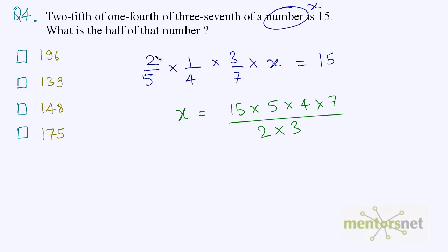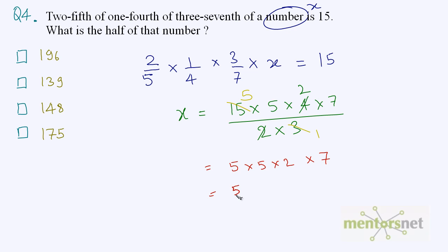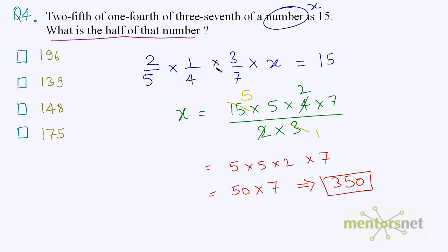We can cancel 2 and 4. Cancelling: 2 times 2 is 4, and 3 times 5 is 15. So we have 5 times 5 times 2 times 7, which equals 5 times 5 = 25, then 25 times 2 is 50, and 50 times 7 is 350. So the value of x is 350, but we have been asked for half of x. Half of x, that is x/2, equals 350/2 = 175. So the answer is option D.